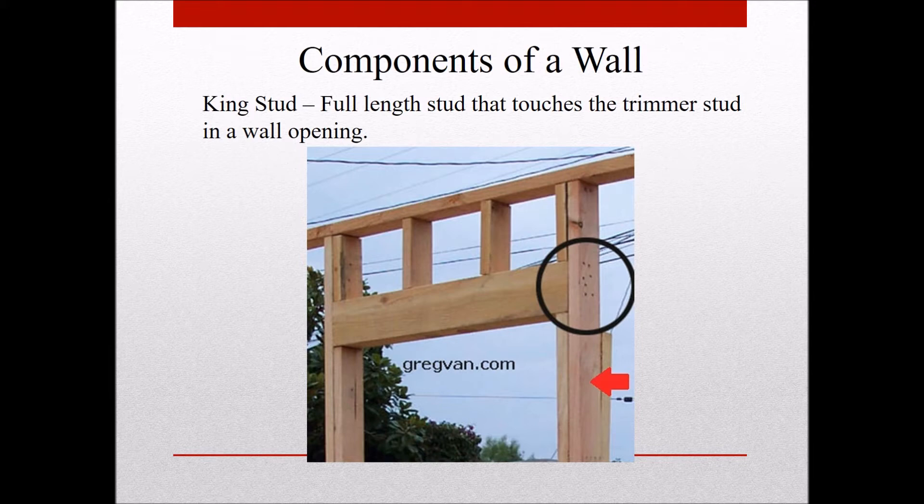Next we have a king stud. A king stud is simply the stud that touches the trimmer stud at a wall opening. It runs from the top plate to the bottom plate and the header is nailed to it.